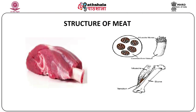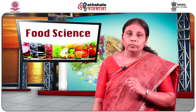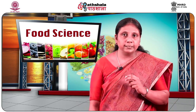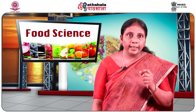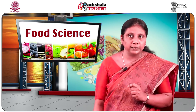This diagram shows the structure of meat. You can see the tendons which connect the muscle to the bones, and also the cross section of muscle bundles made up of individual muscle fibers surrounded by connective tissue. There are two types of muscle fibers inside the muscle bundle: fine muscle fibers and thick muscle fibers.